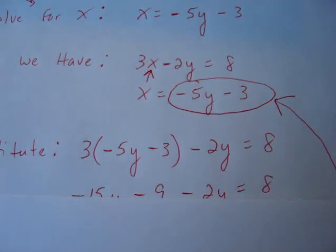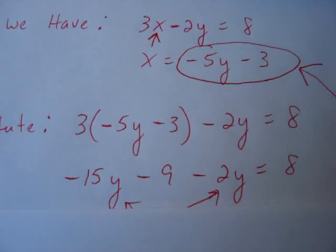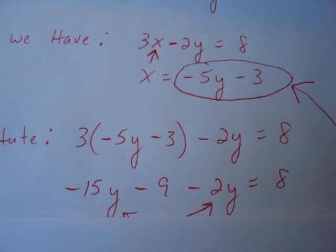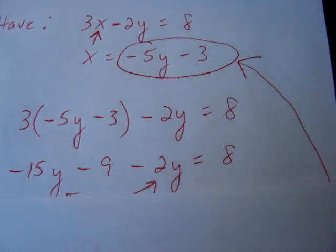Now we have to use distributive property. 3 times negative 5y is negative 15y. 3 times negative 3 is negative 9. Recopy the minus 2y equals 8.